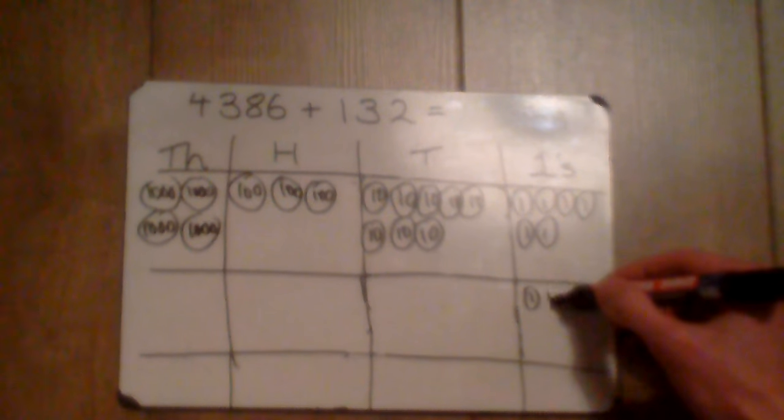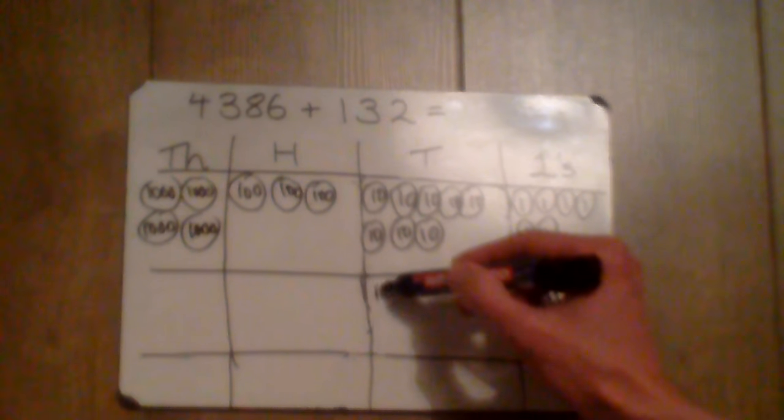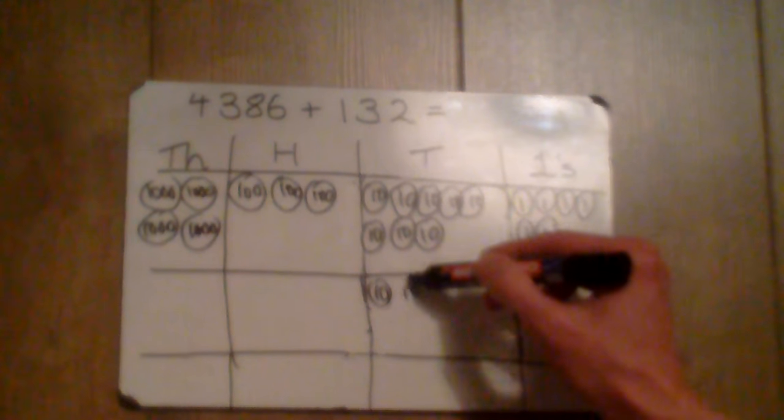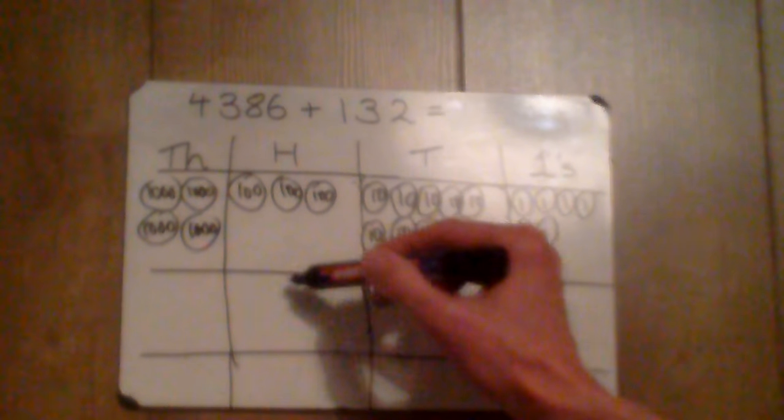And in 132 we have 2 ones, 3 tens, and 1 hundred.